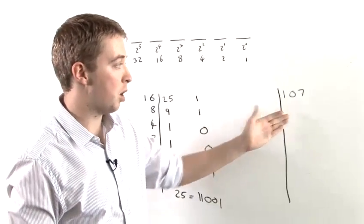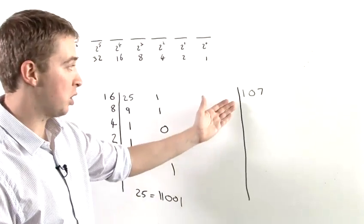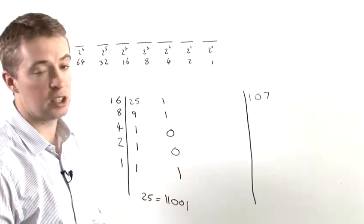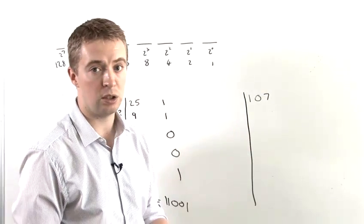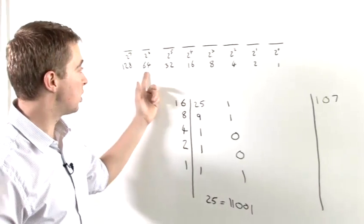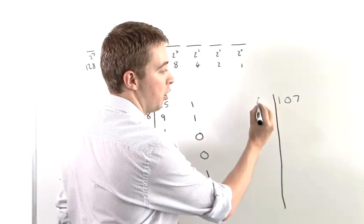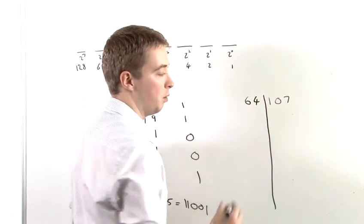So now we're going to look at another example, which is slightly more complicated. Again, we have to decide on how many digits this number is going to have when we convert it into a binary number. So 107 is greater than 64 but less than 128. So we're going to start by dividing 107 by 64.